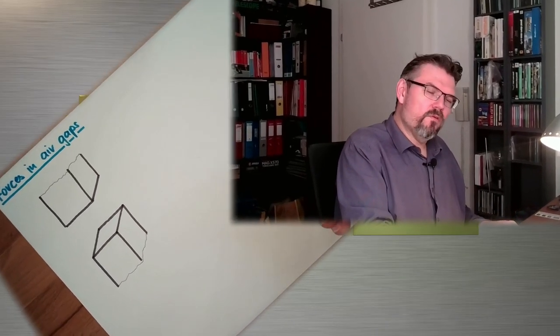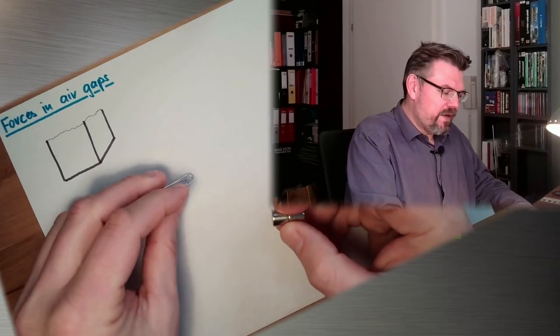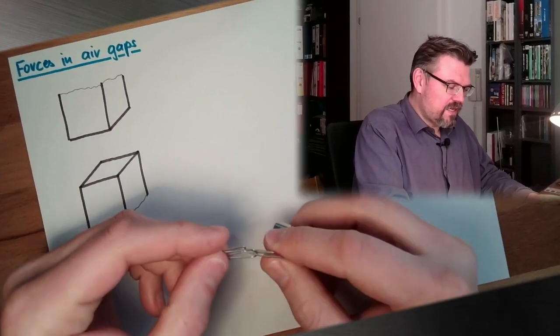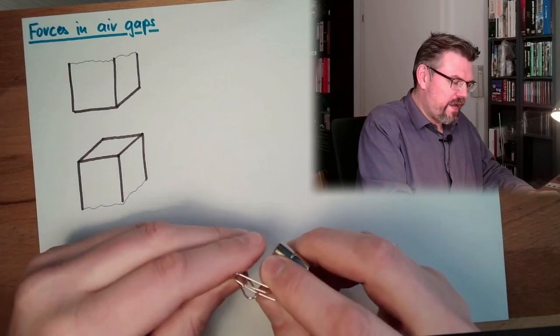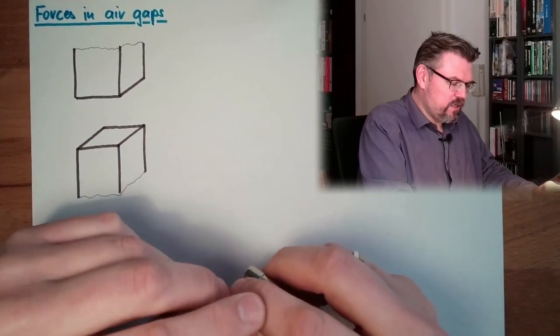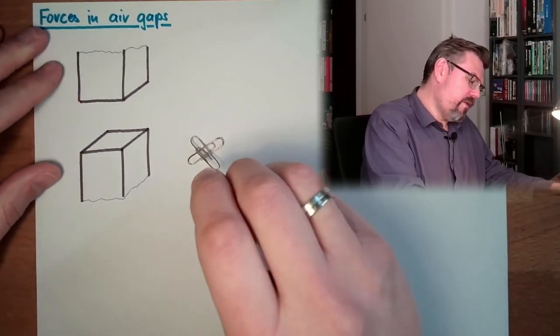Hello and welcome to a new video about the magnetic field. Today, we want to explore this. Here I have a magnet. Here I have a paper clip, and if I come in close — we see there must be a force. There must be a magnetic force inside a so-called air gap. This is actually what we try to calculate.